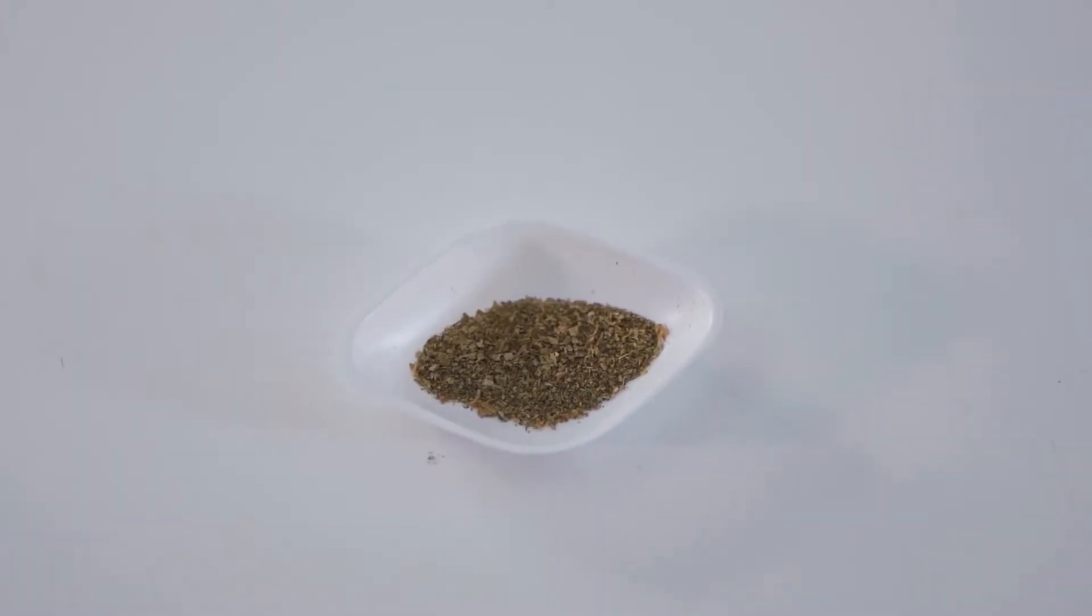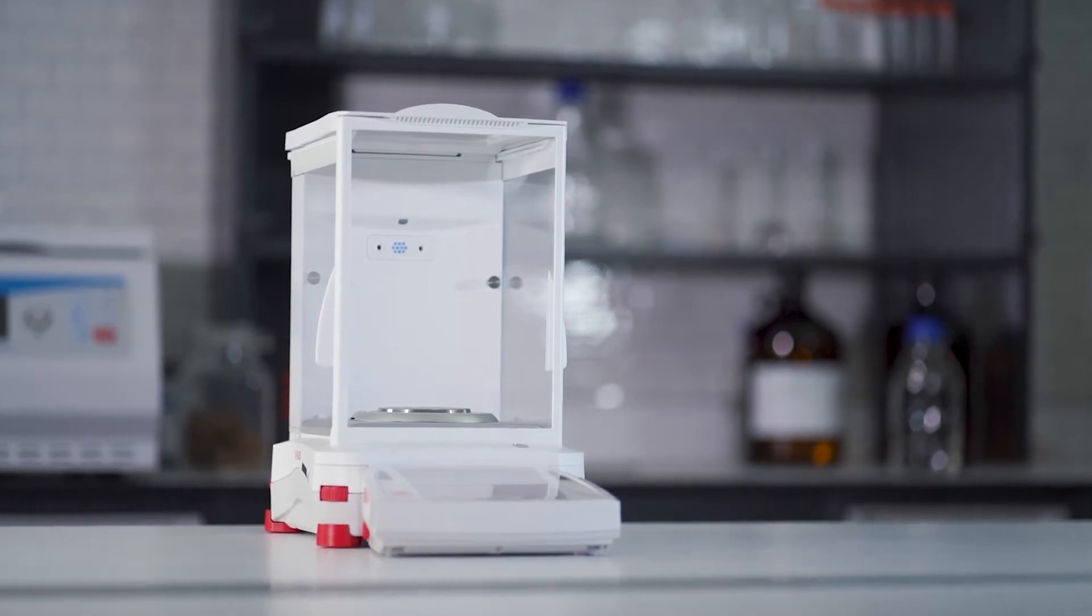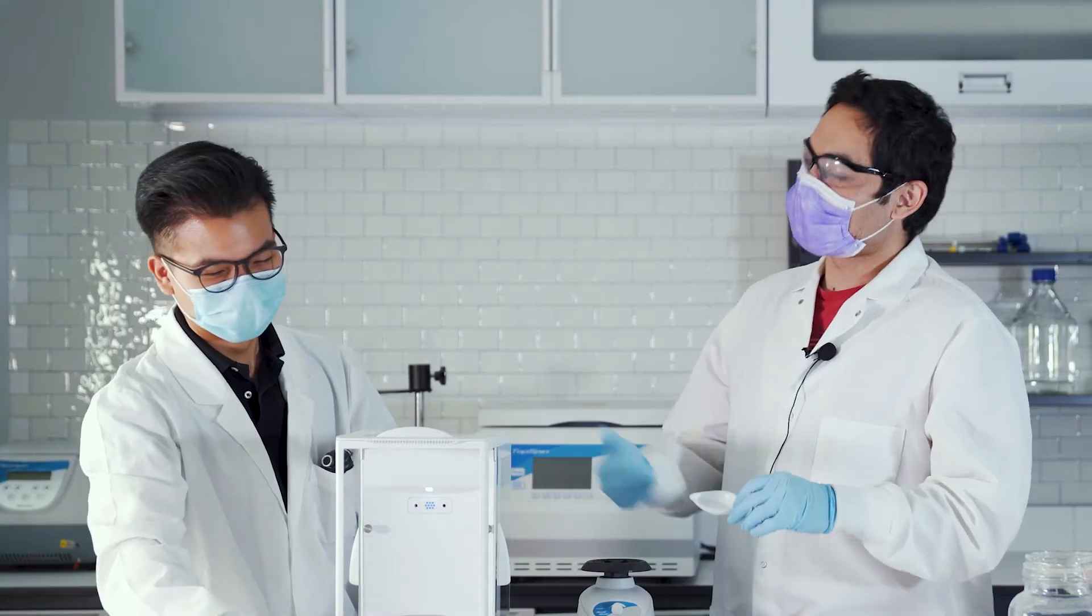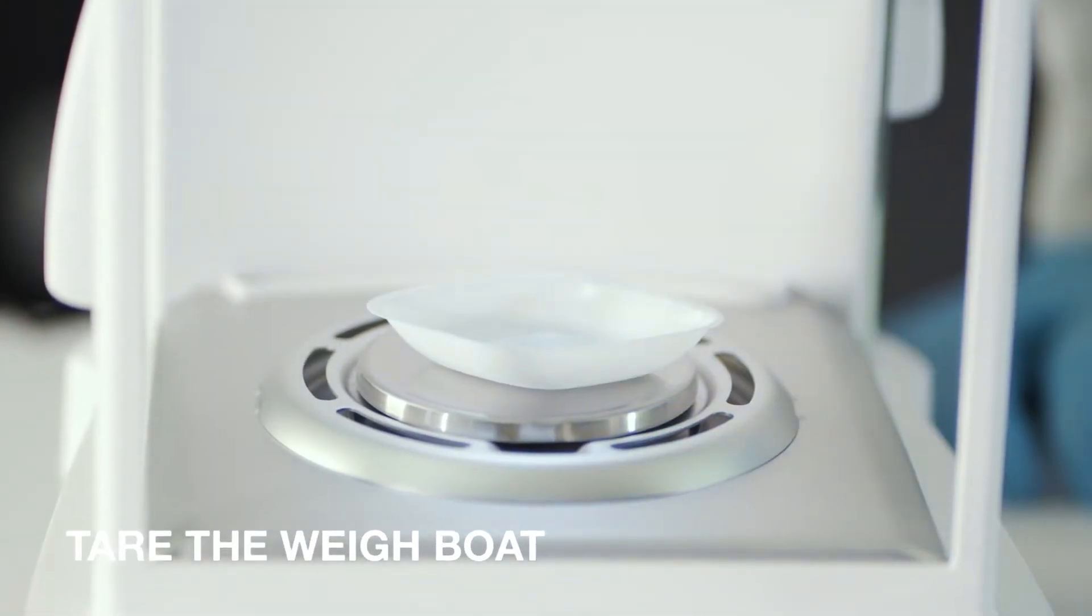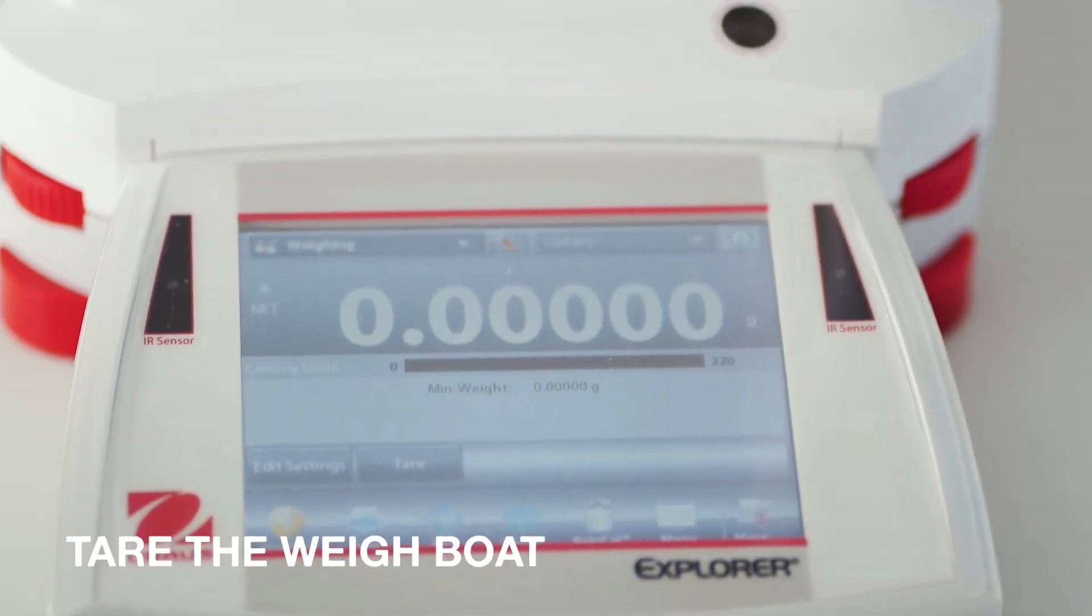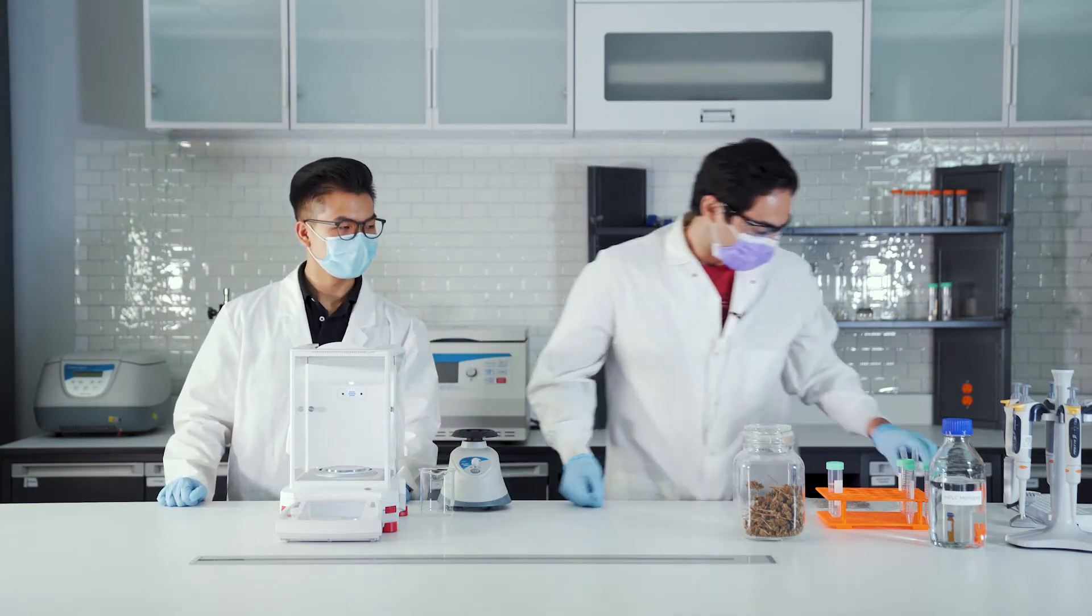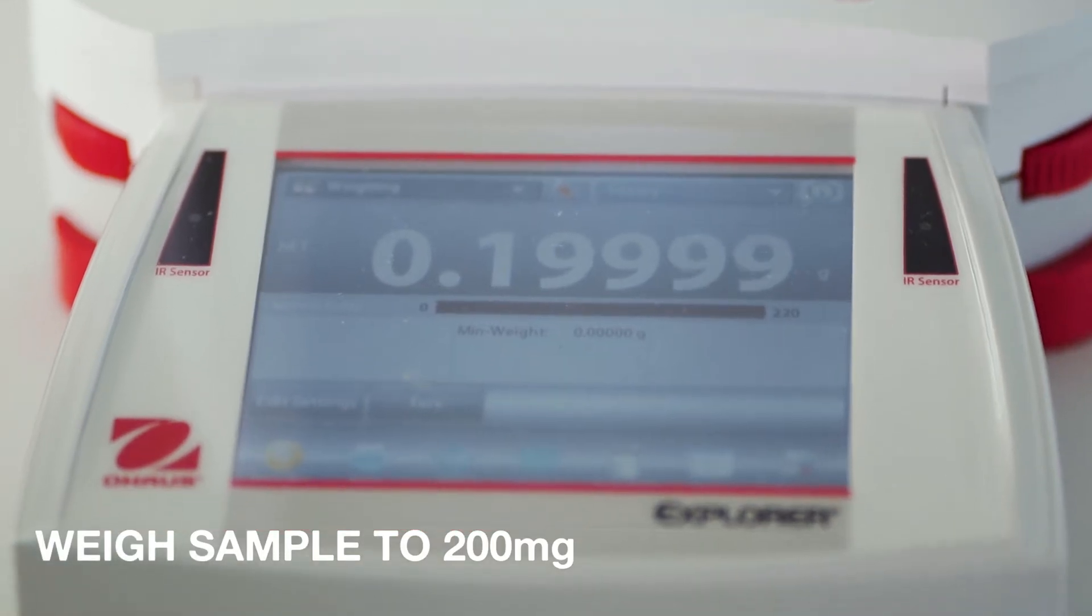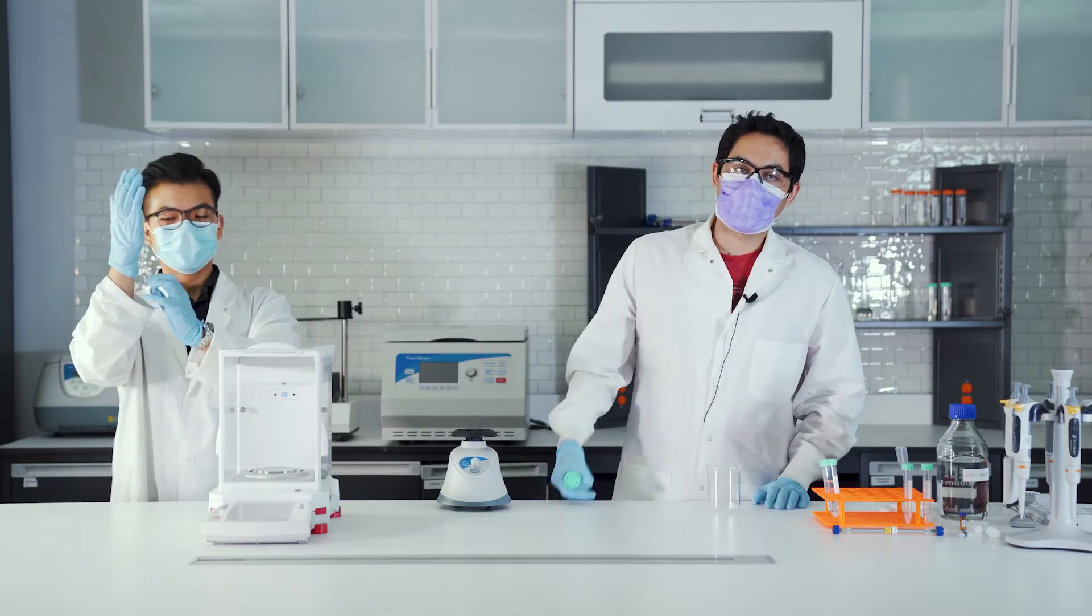Now that you have a nice homogenized sample, the next thing to do is we want to weigh out about 200 milligrams. The first thing you'd want to do is you'd want to tare the weighboat. After taring that, let's add about 200 milligrams. All right, so that's about 200 milligrams. Close enough.